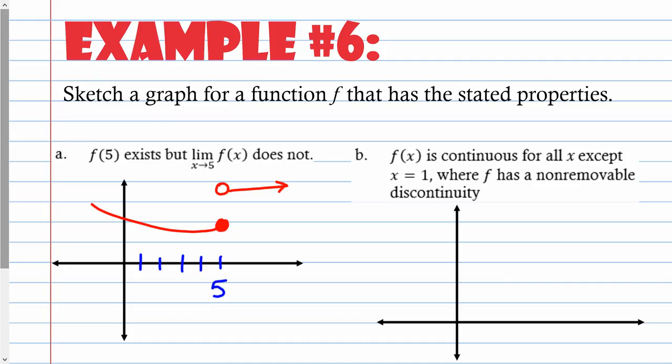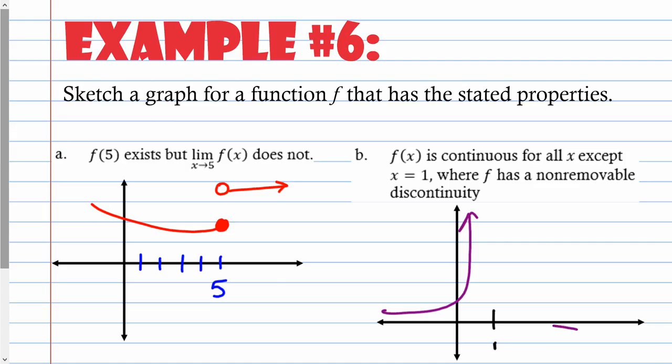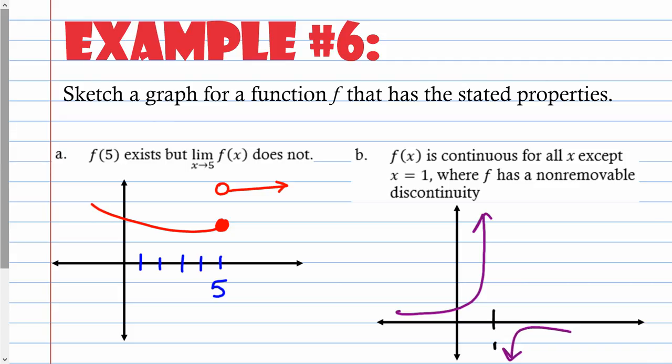Part B: f(x) is continuous for all x except x = 1. At x = 1 we need a non-removable discontinuity — jump, infinite, or oscillating. An infinite discontinuity works well: draw a vertical asymptote at x = 1 with the graph going to infinity on both sides, and continuous everywhere else. Any valid graph showing an infinite discontinuity at x = 1 and continuity elsewhere is acceptable.